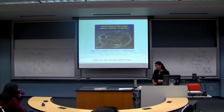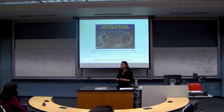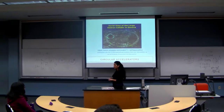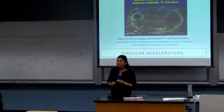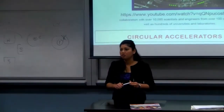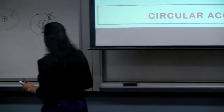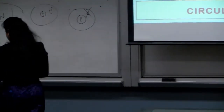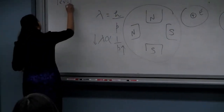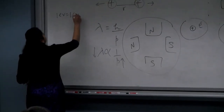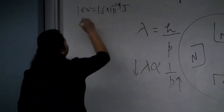The LHC can accelerate charged particles to energies on the order of tera electron volts. One tera is 10 to the power of 12, and one electron volt is equal to 1.6 × 10⁻¹⁹ joules.